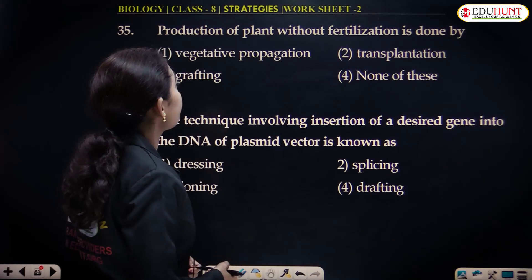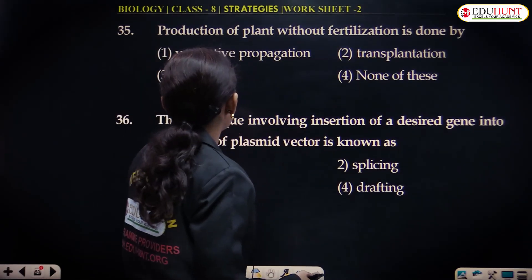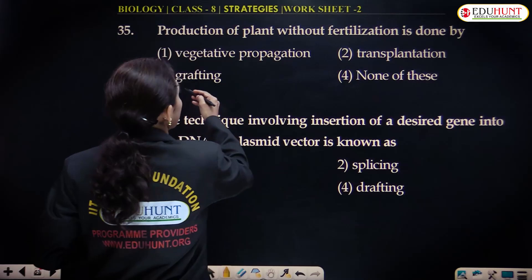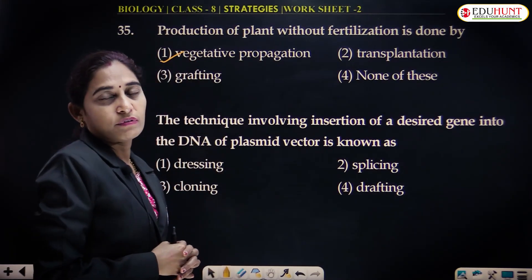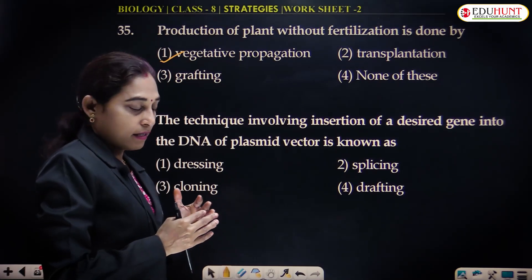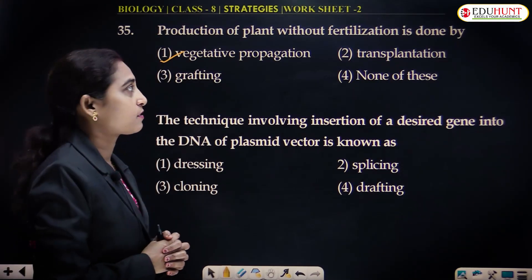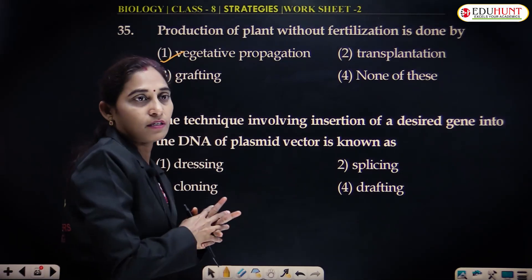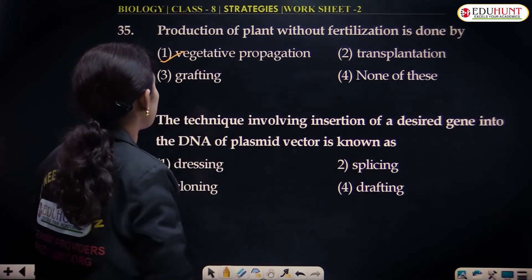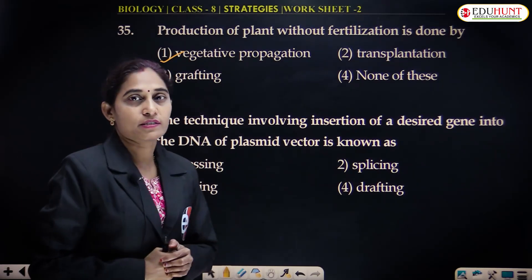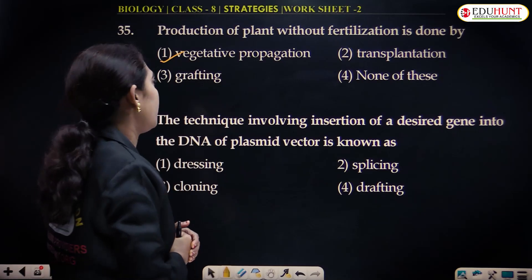Production of plants without fertilization is done by vegetative propagation. Through vegetative propagation, plants are produced without fertilization, irrespective of the fusion of gametes. Plants are produced through vegetative means, and stem cuttings act as the seed material in this process.